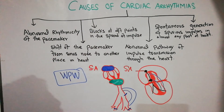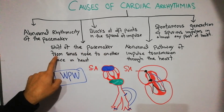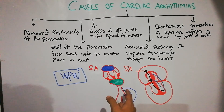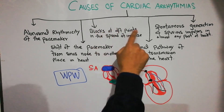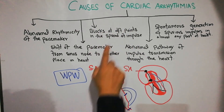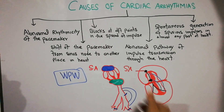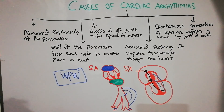In summary, the causes of cardiac arrhythmias are: abnormal rhythmicity of the normal pacemaker; shift of the pacemaker from the sinus node to another place in the heart; blocks at different points in the spread of the impulse; abnormal pathways of impulse transmission; and spontaneous generation of spurious or fake impulses in the heart. That's all about the causes of cardiac arrhythmias. Thanks for watching.